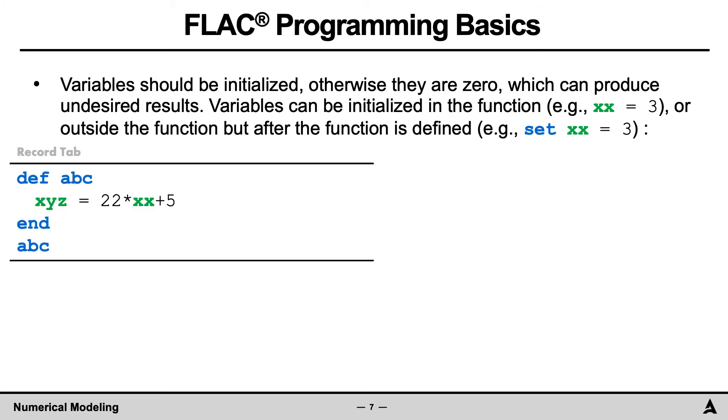As an example, consider the script here, where the results XYZ is 5 and XX is 0.